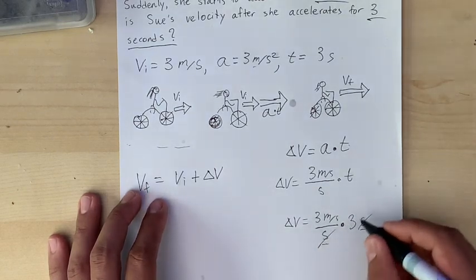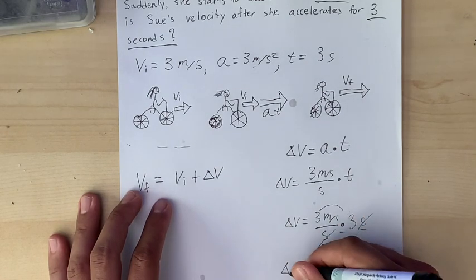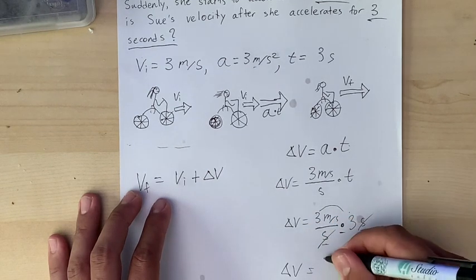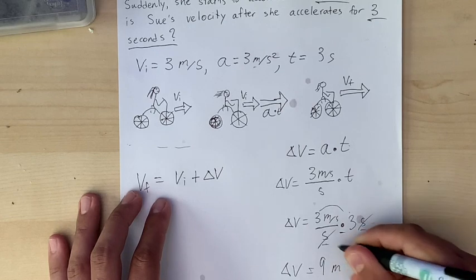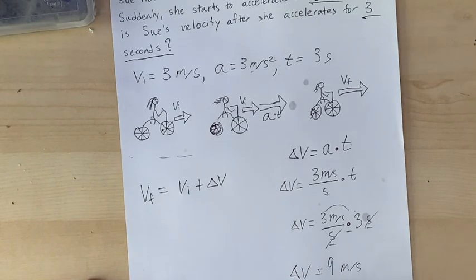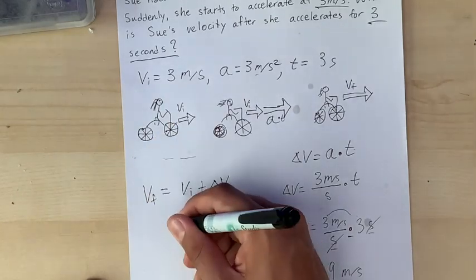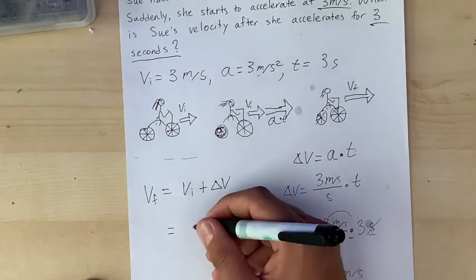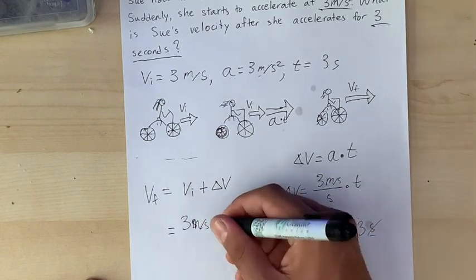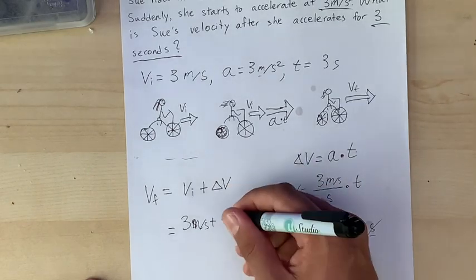So delta V, now we have actual numbers for this. The change in velocity is gonna be our acceleration three meters per second per second times the time which is three seconds. Do you notice this? These seconds can totally cancel. And then we can combine these numbers we're multiplying. So delta V is three times three, nine meters per second. All the units that are left over stay behind. So now we do have a number for everything but our unknown. We have VI that's three. So VF equals three meters per second plus nine meters per second, our change in velocity.